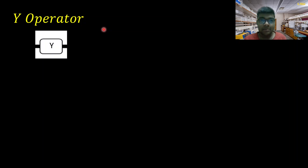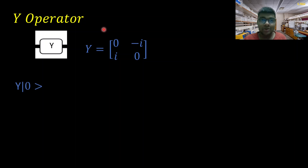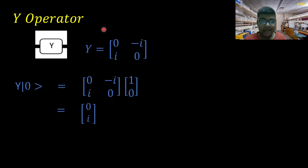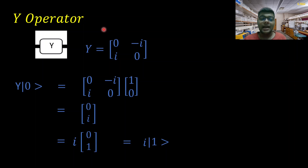Now let's get to the second gate for today: the Y operator, the Pauli-Y gate. This is its symbol, and this is its matrix. From here, things will get a little complex — literally complex — because complex numbers now come into the picture. Let's apply it on the |0⟩ state and see what we get. We end up with a vector whose second entry is complex, and factoring out the imaginary unit i, we can write it as i times the |1⟩ vector.